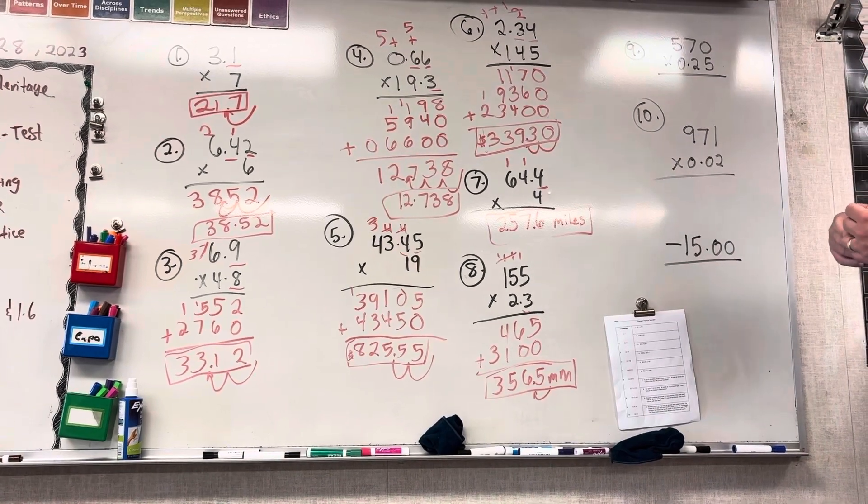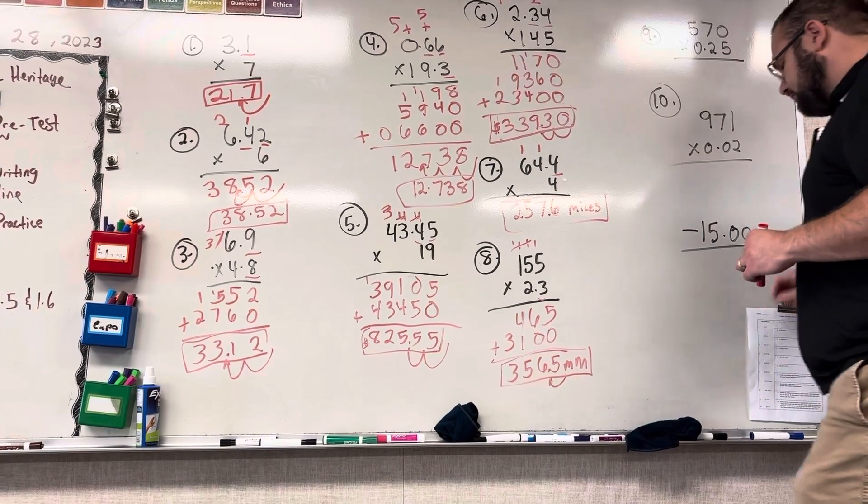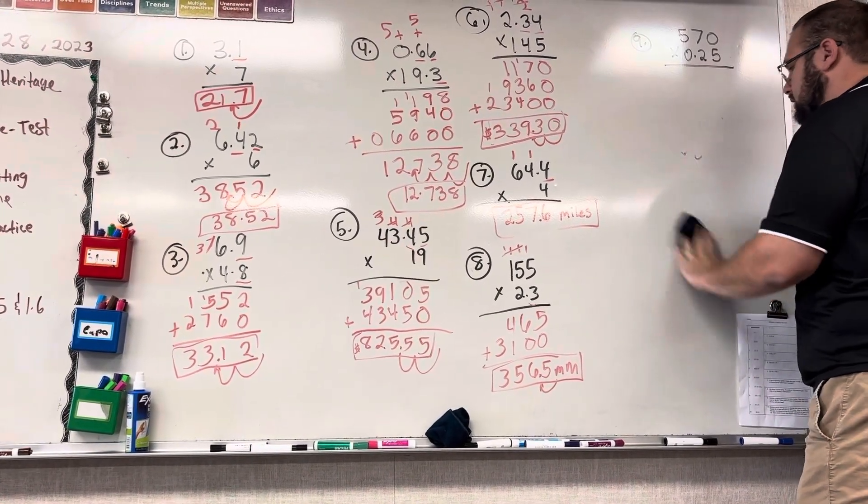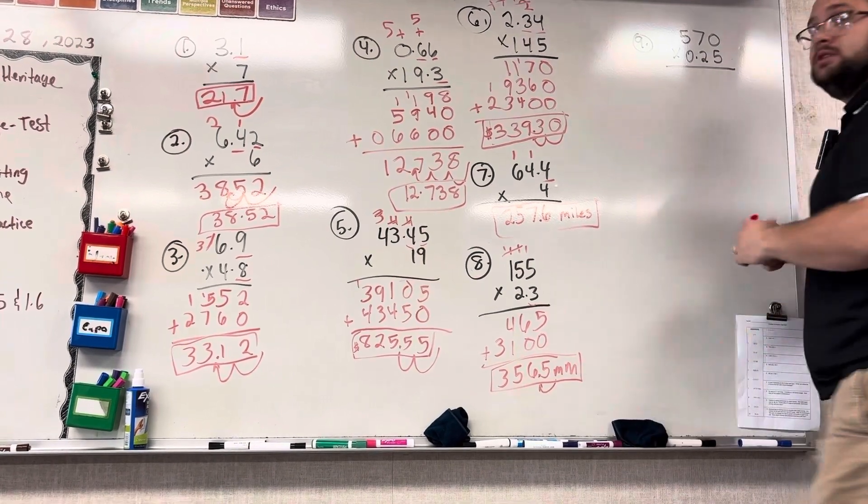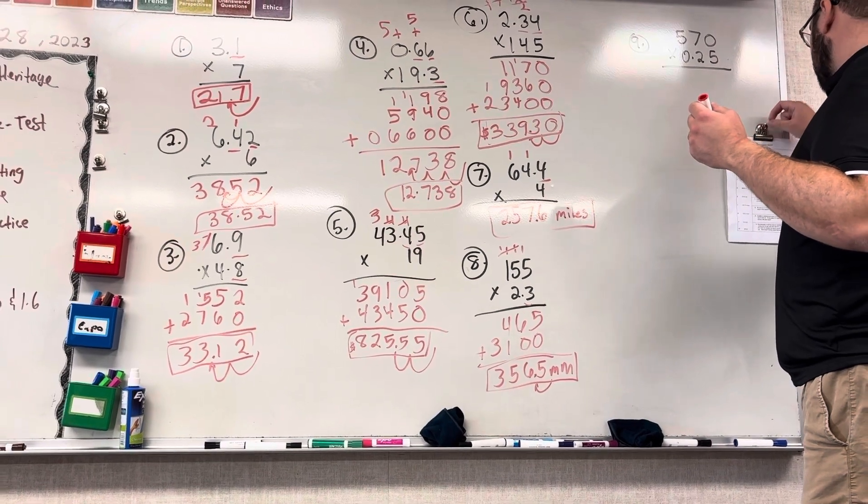Alright, let's do number 9. I'm actually going to raise number 10 to do number 9. Chill out, guys, please. We're almost done. It says, Estelle sells each cup for 0.25 cents.